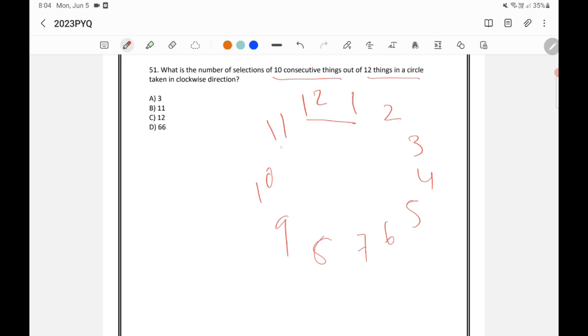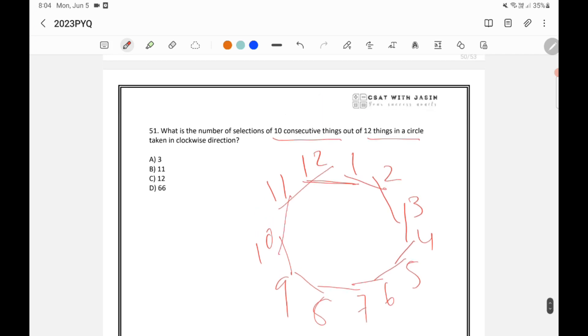So just add like this 1, 2, 3, 4, 5, 6, 7, 8, 9, 10, 11 and 12. So there are total 12 possibilities here.